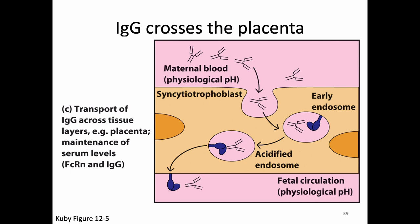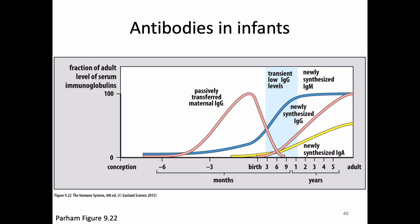Before birth, the baby mostly has only mom's IgG. That IgG eventually degrades because we're transferring protein, not antibody-producing cells — the baby has to make its own cells. The baby doesn't really start making substantial amounts of its own antibodies until around six to nine months. If mom breastfeeds, there's also some transferred IgA.